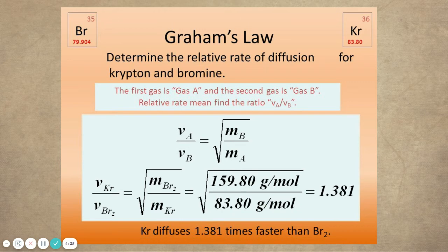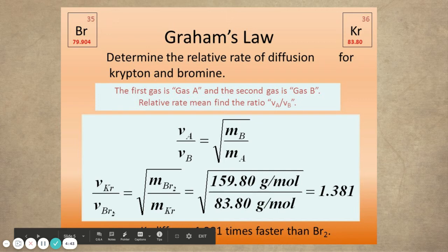The velocity that's on the top will be compared to the velocity on the bottom. That's why it says that krypton goes one and a half, almost, times faster than bromine. The one on the top is relative to the one on the bottom. So krypton is one and a half times faster than bromine.